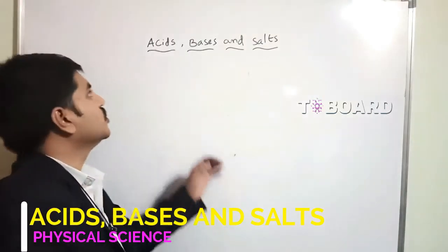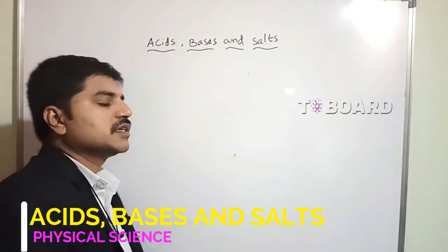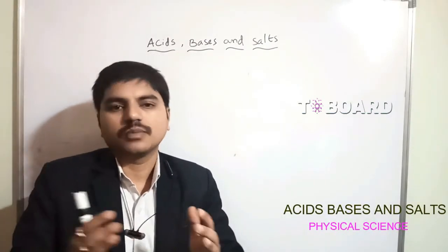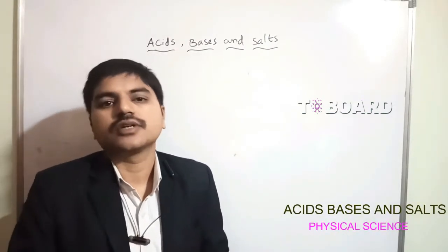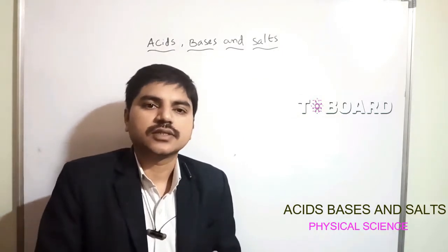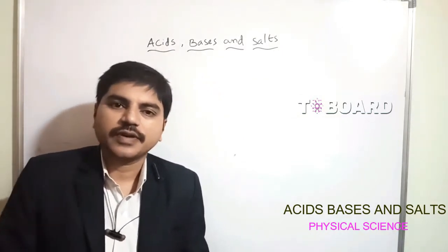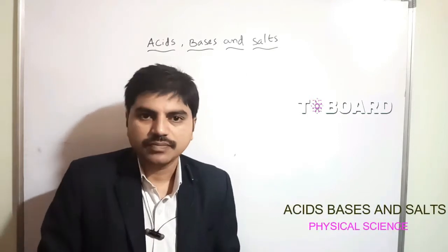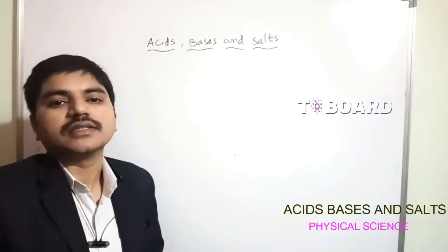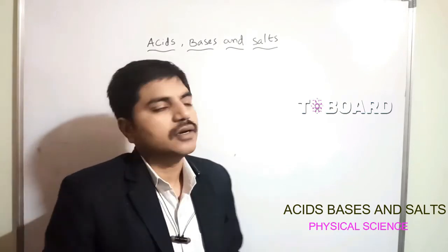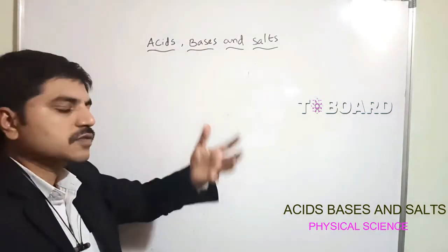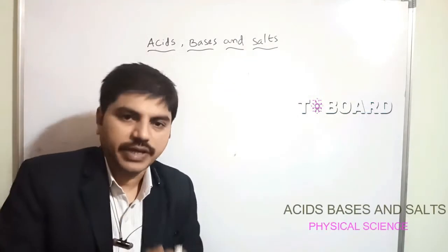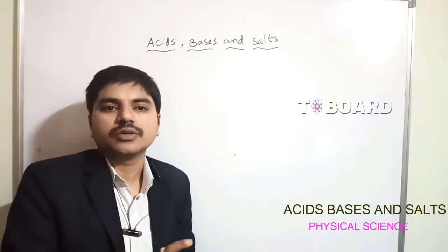Today we are going to discuss acids, bases, and salts. In our daily life we can see different types of acids and bases. For example, lemon is one type of acid, hydrochloric acid is also an acid, and soap is one of the bases. These involve chemical equations and chemical reactions.